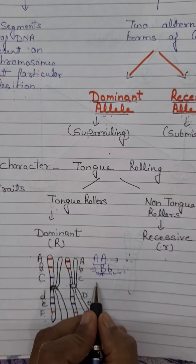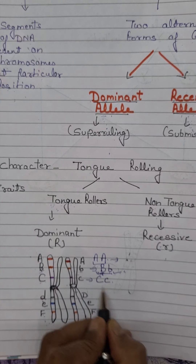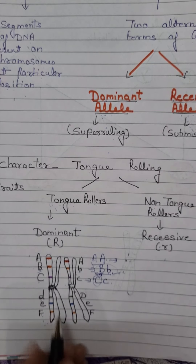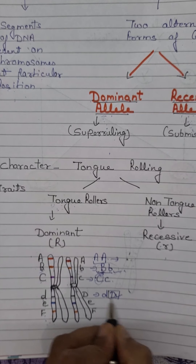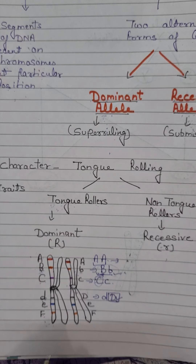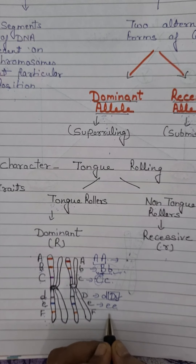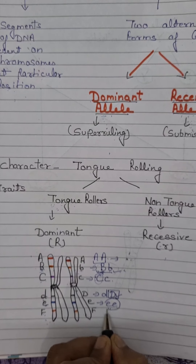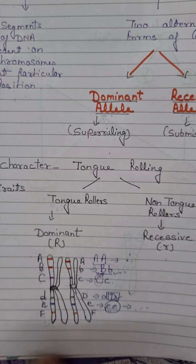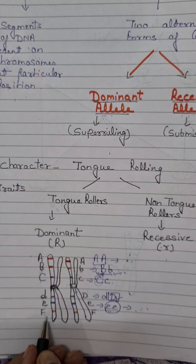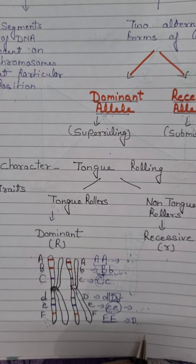The third character is again controlled by 2 alleles — one capital (dominant) and one small (recessive) — so the dominant trait is expressed. For the 4th character, again one small d and one capital D are present, meaning the dominant allele is present and that dominant trait is expressed. For the 5th character, it is controlled by 2 recessive alleles, so the recessive trait is expressed. For the 6th character, both dominant alleles are present, so the dominant trait is expressed.